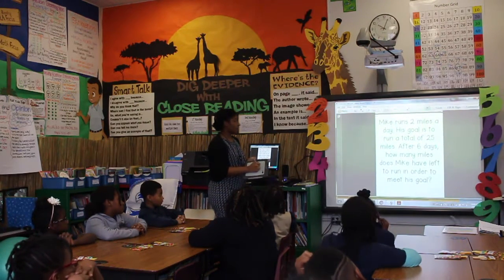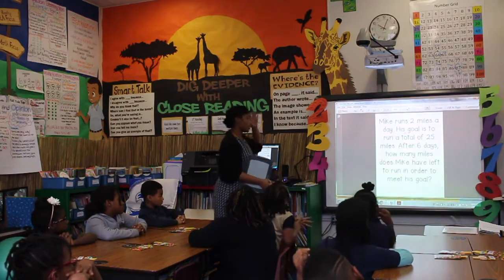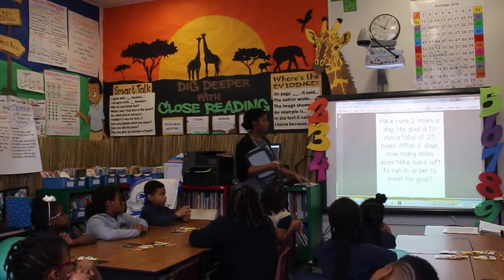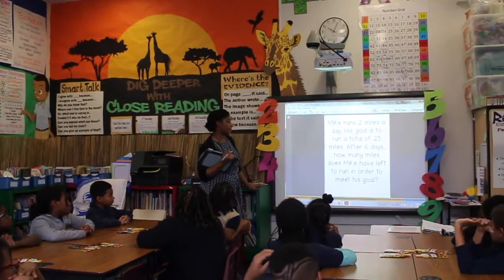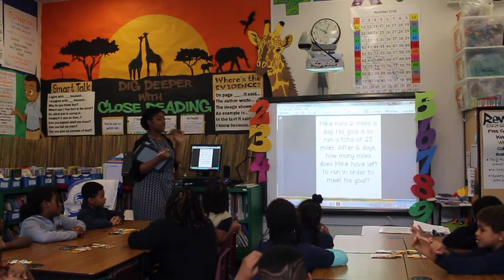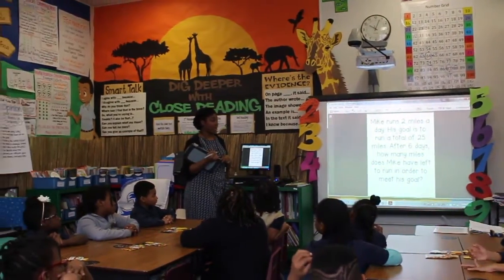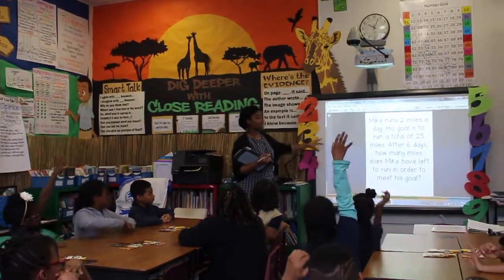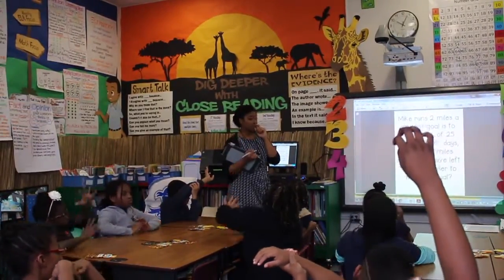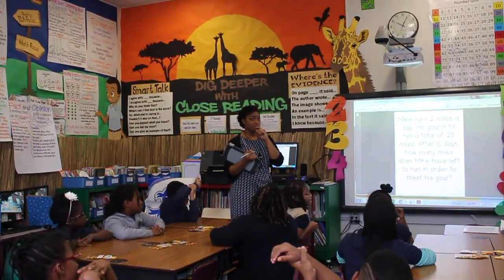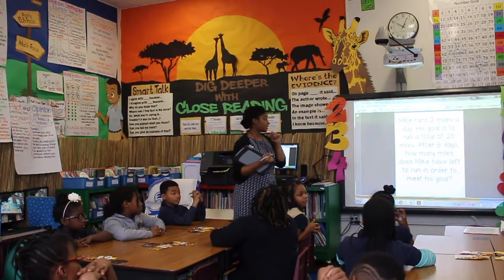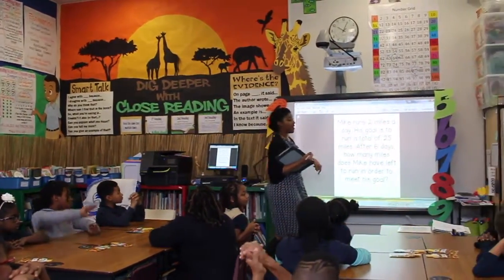So here was your question. It was: Mike runs two miles a day. His goal is to run a total of 25 miles after six days. How many miles does Mike have left to run in order to meet his goal? What were some key words that you saw in this? His goal is to do 25 total miles.